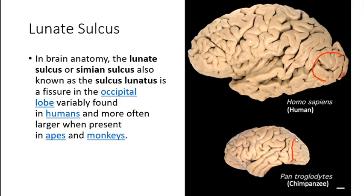A term you will encounter is the lunate sulcus, which is an inconsistent sulcus also called the simian sulcus because it is observed in ape brains. It is a fissure in the occipital lobe variably found in humans, but more often and larger when present in apes and monkeys. It has phylogenetic significance — in Homo sapiens it has moved posteriorly and downwards compared to other simians.